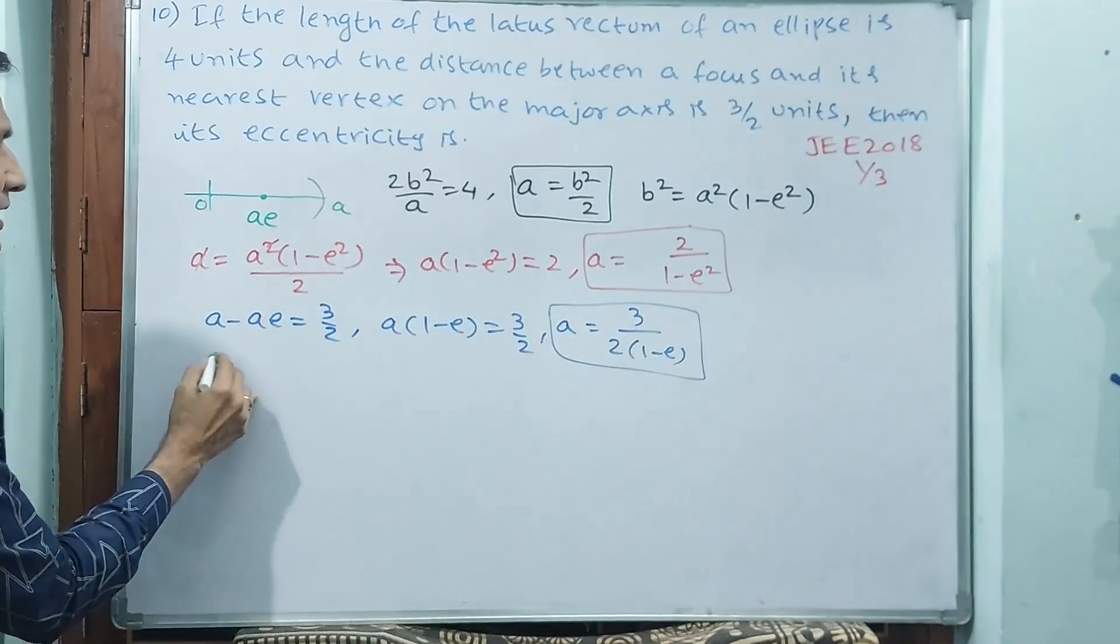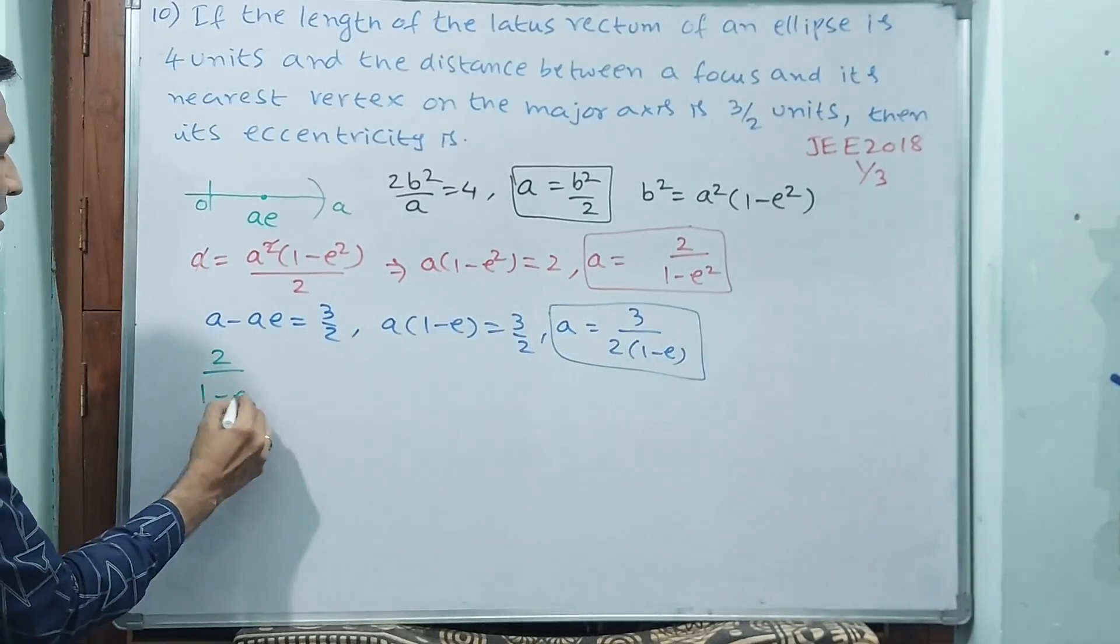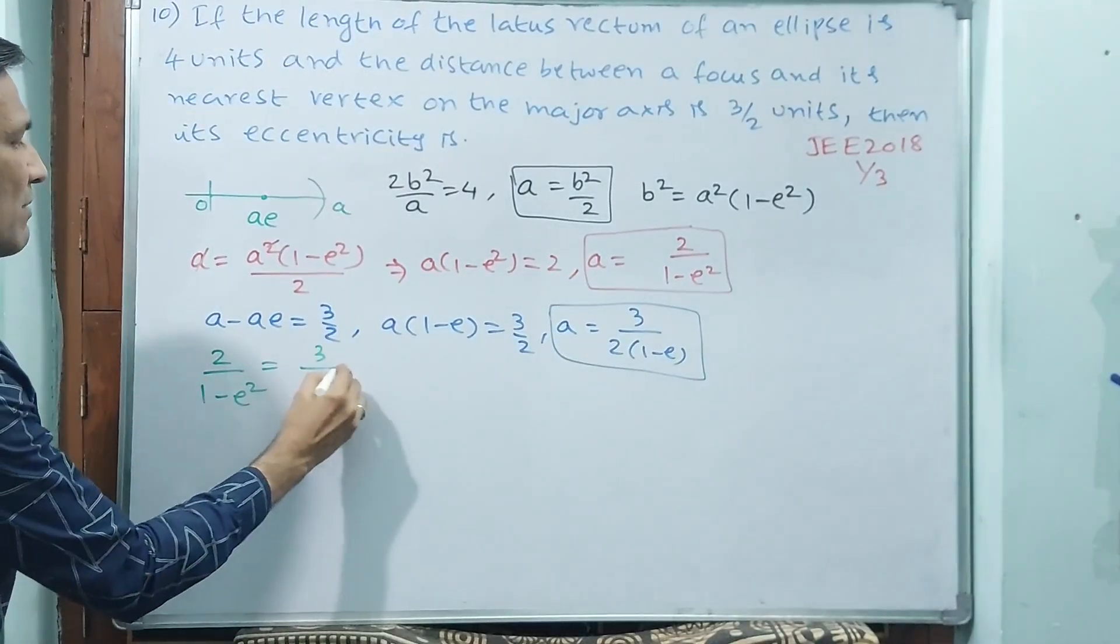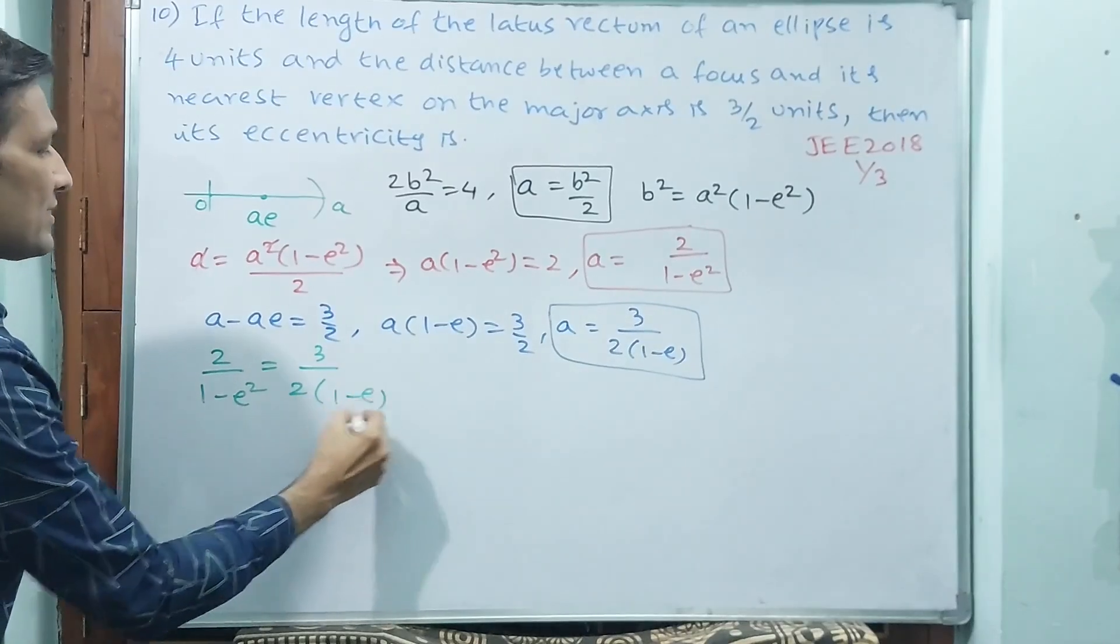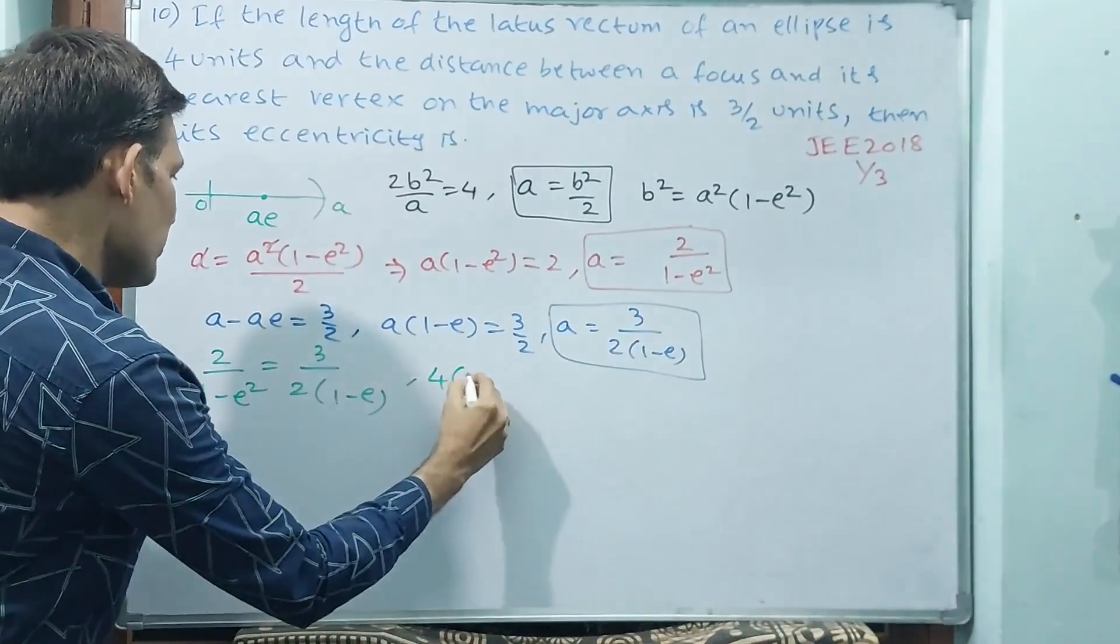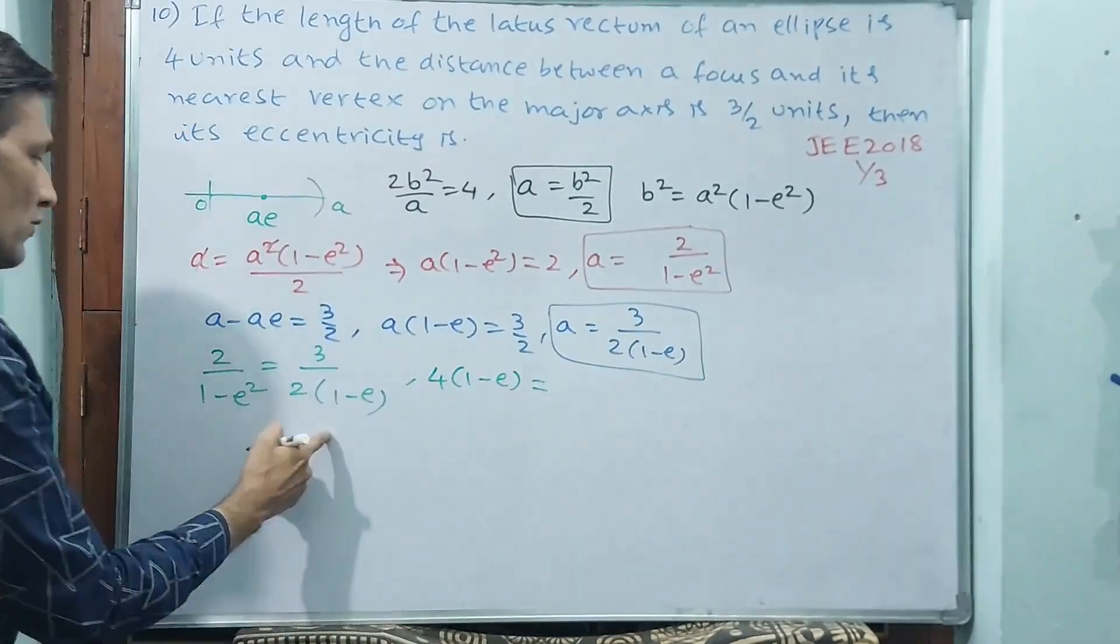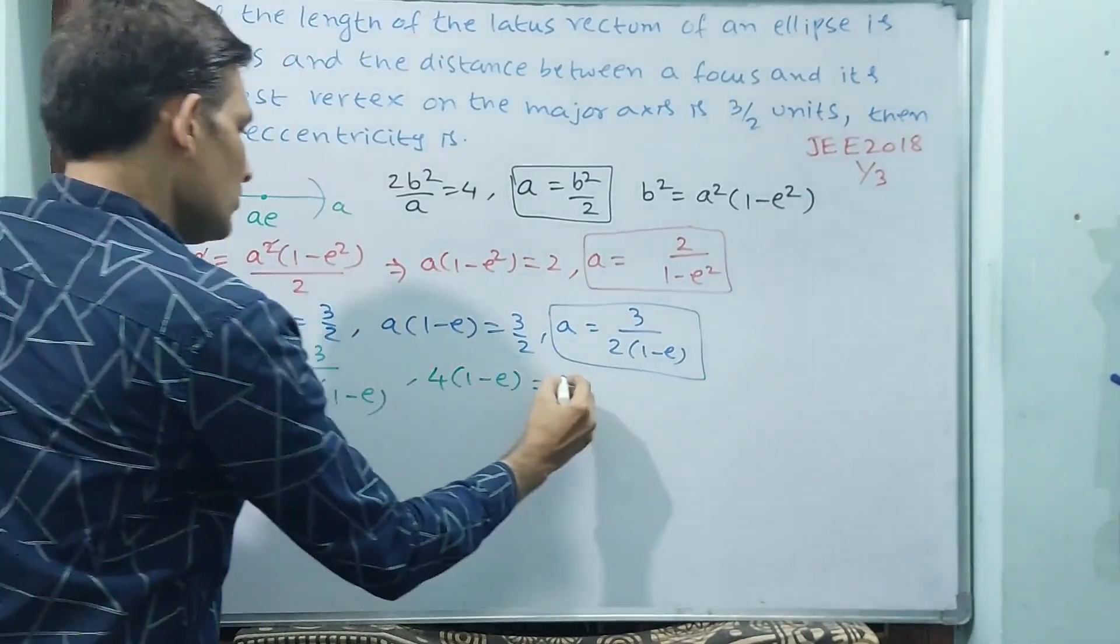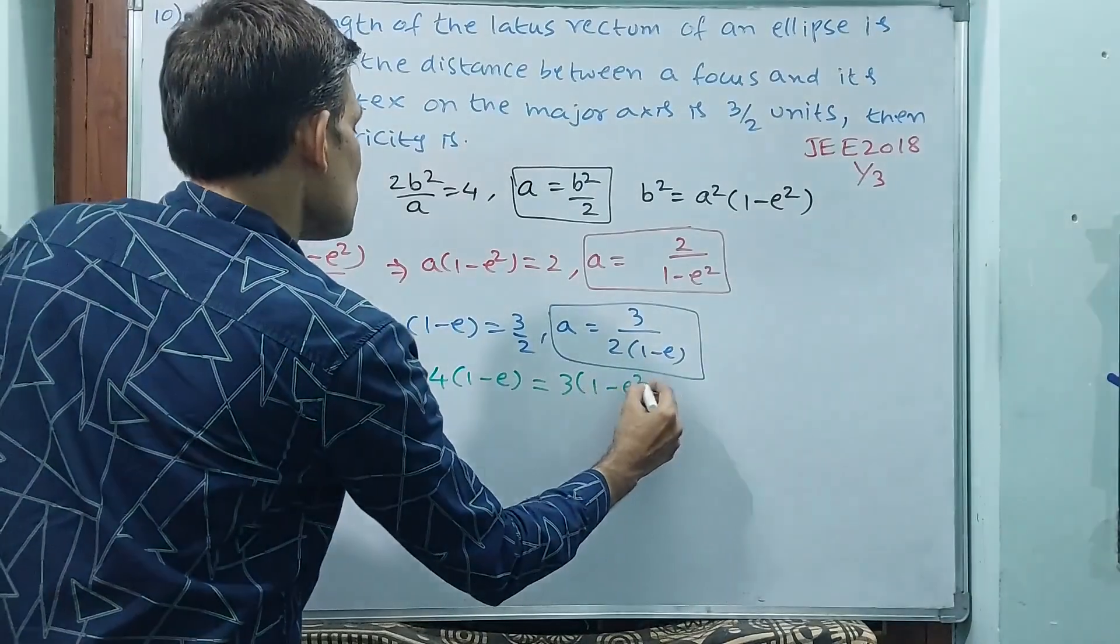Let me do it. That means see what I must say. Here 2 by 1 minus e squared is equal to 3 by 2 into 1 minus e. Okay, cross multiply. See, 4 into 1 minus e is equal to 3 into 1 minus e squared.